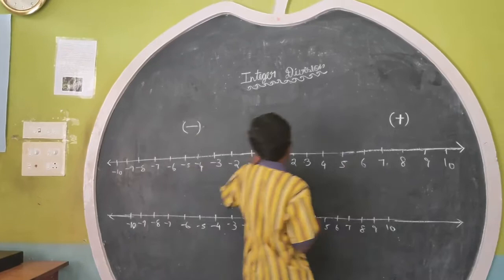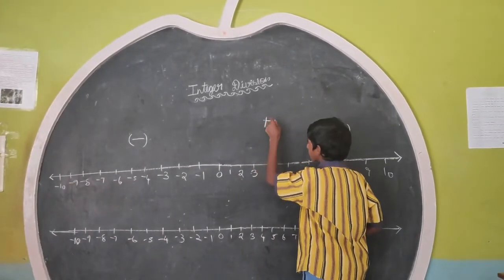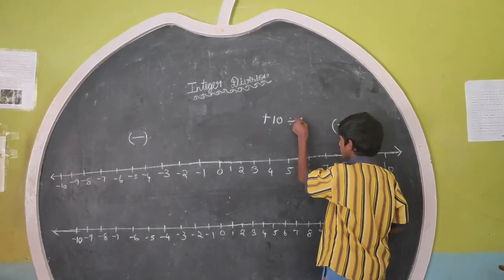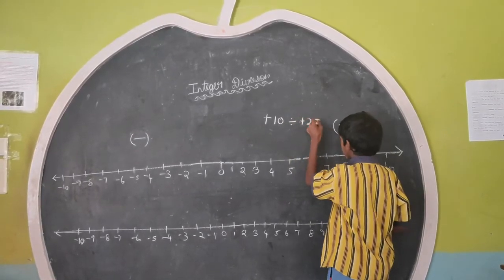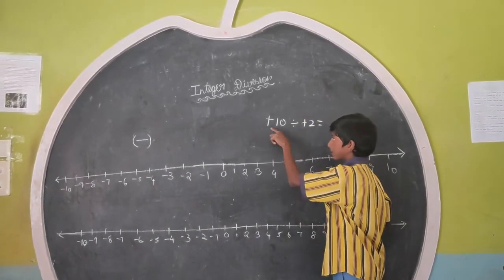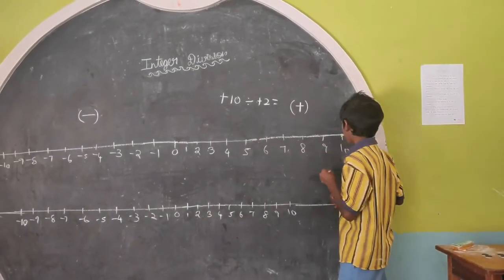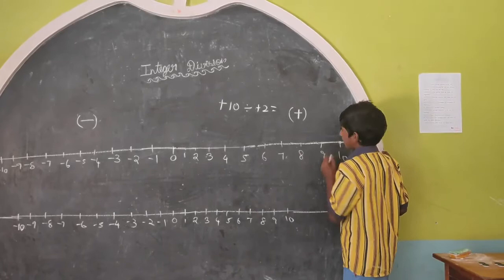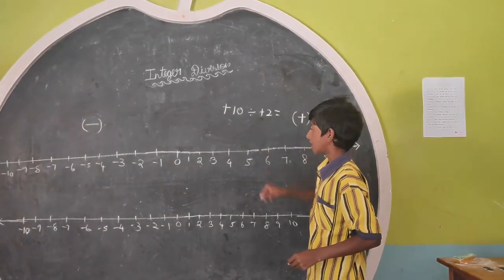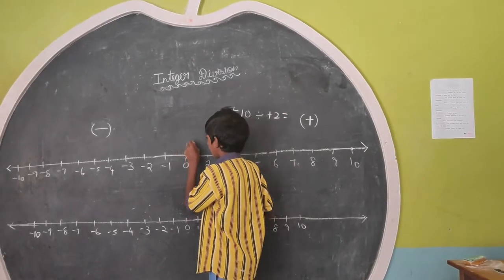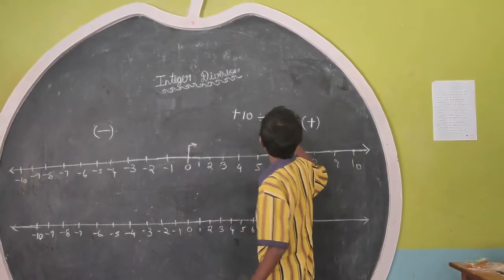First plus 10, plus 2. First I take plus 10, first we take plus 10, we point on number line. This plus is go forward, go 2 steps.